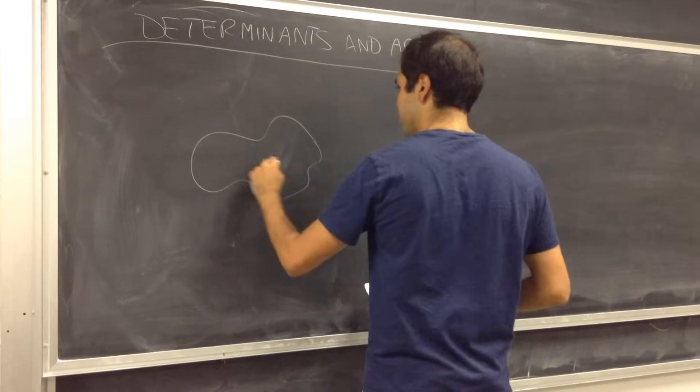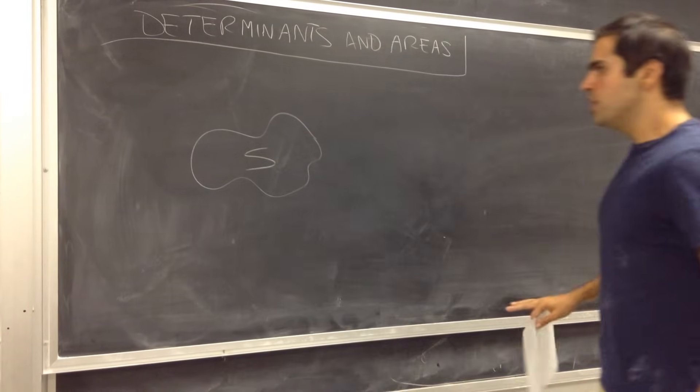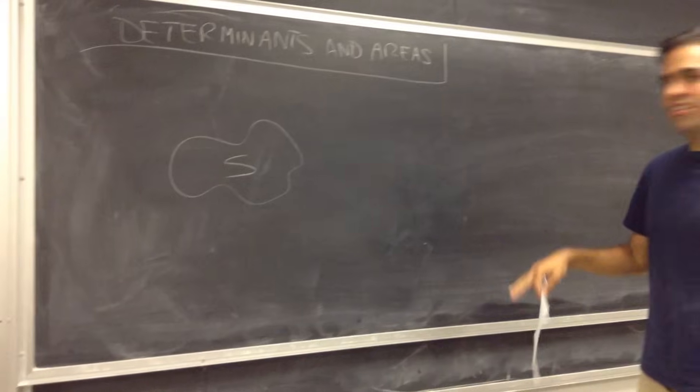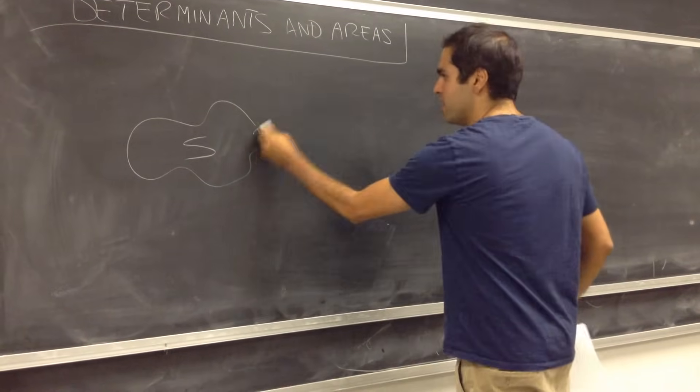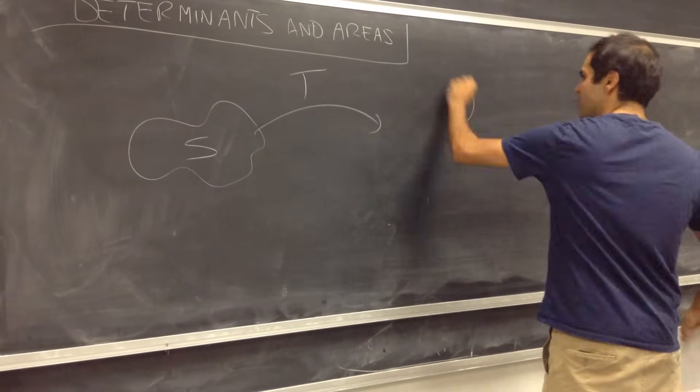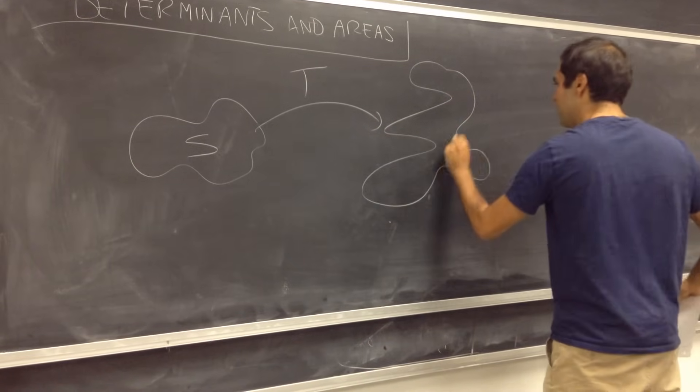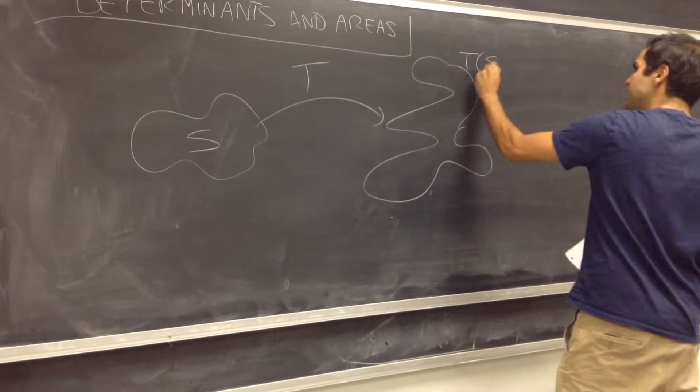Suppose you have some object, some solid S, and you apply some very weird linear transformations on it. Think of a linear hurricane that transforms this S into this wobbly thing, T of S.